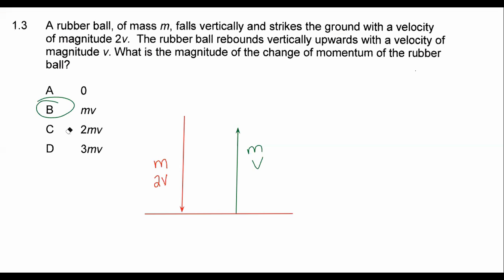B, duh. Because you're going to say 2MV minus MV because they want to know the change in the momentum.